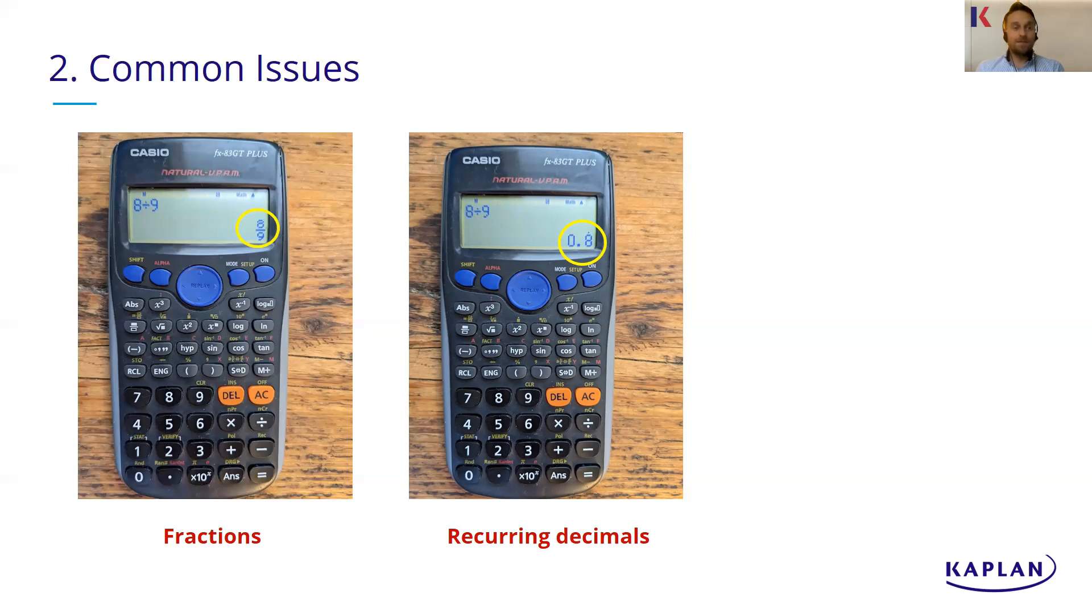So to two decimal places, that's actually 0.89, which is obviously a slightly different answer. And to one decimal place, it's 0.9, isn't it? So it's something like that sometimes catches people out. They don't like that. It's not all that useful in an exam to have a recurring decimal.